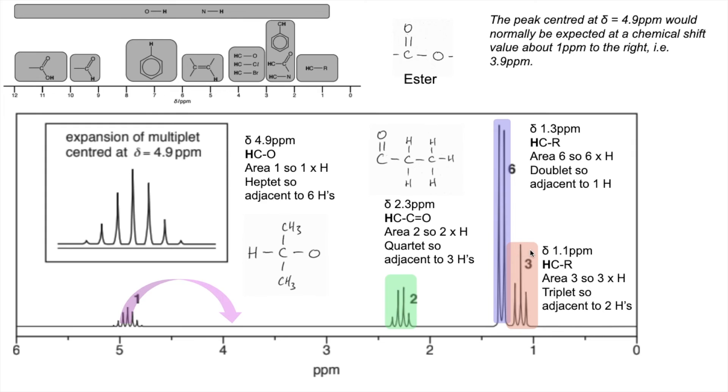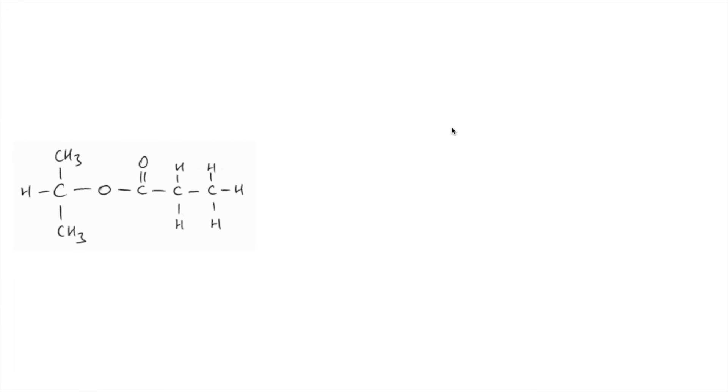One thing to note here is whenever you see a triplet and a quartet in a proton NMR spectrum, it means you've got an ethyl group in your molecule. So putting that all together, that must be the structure of the ester.